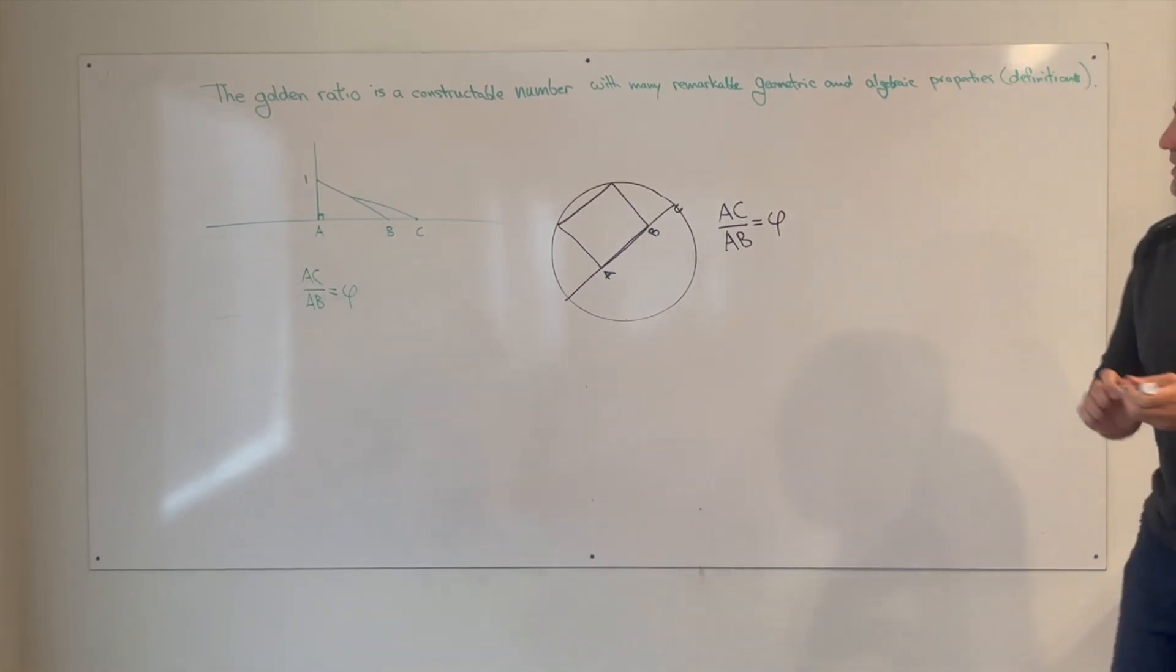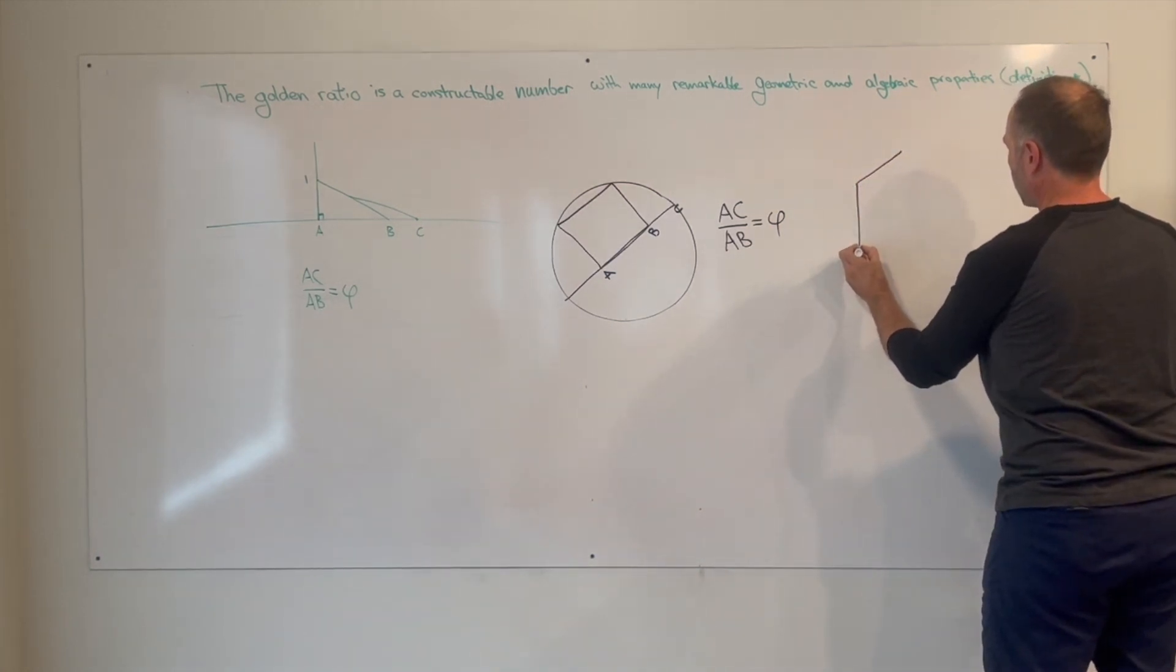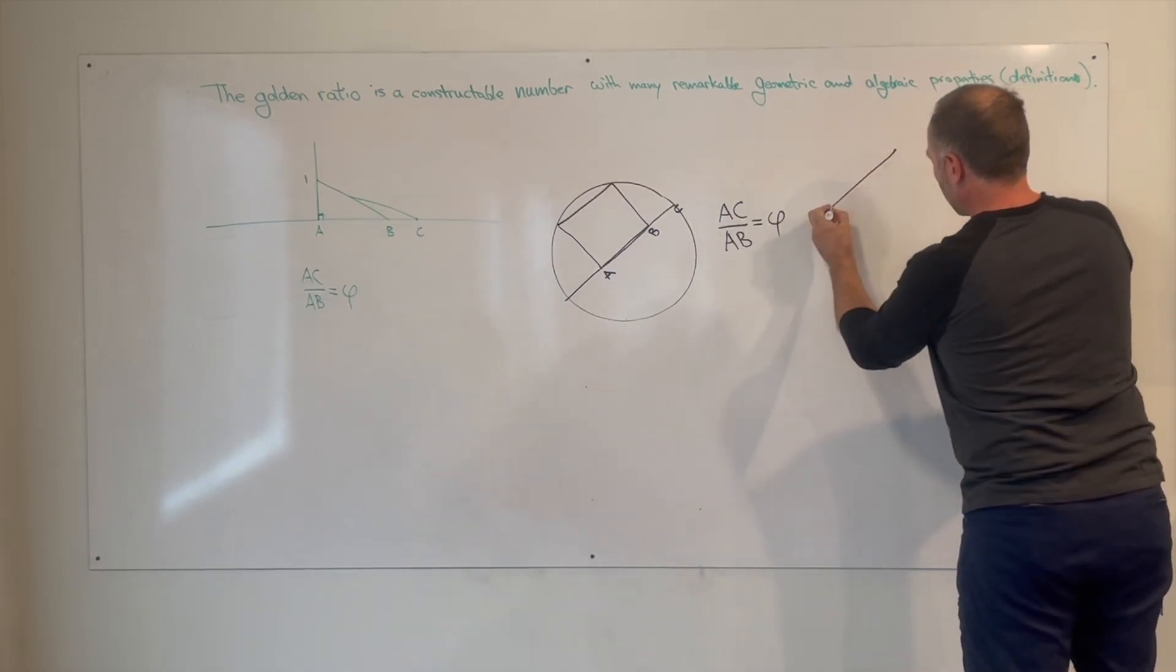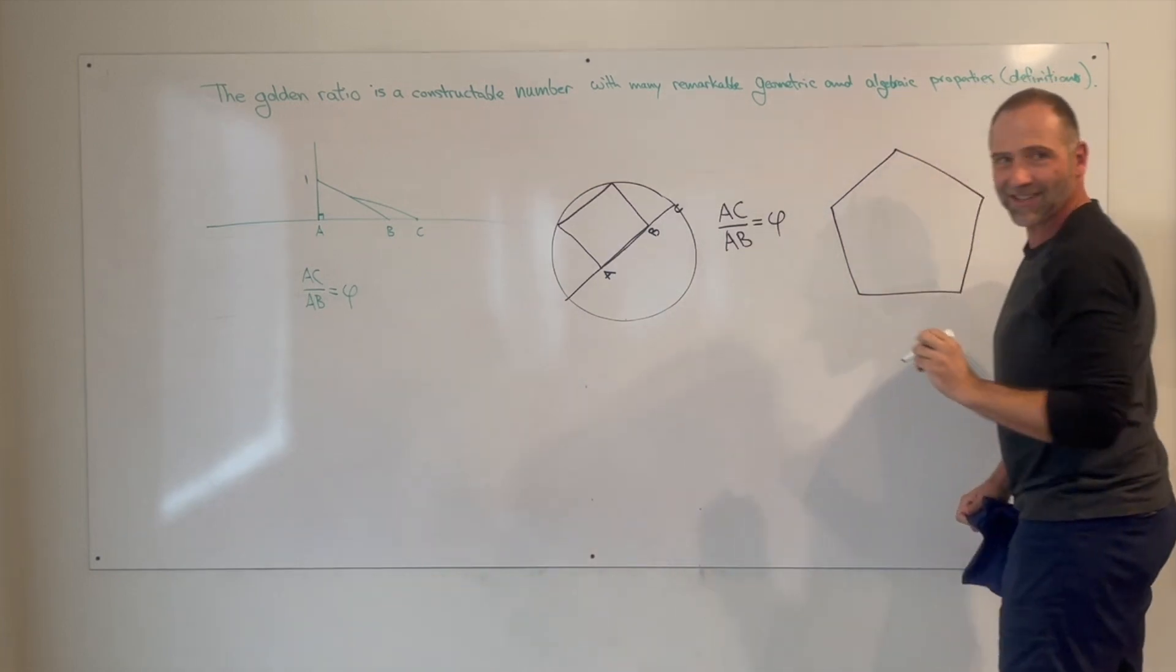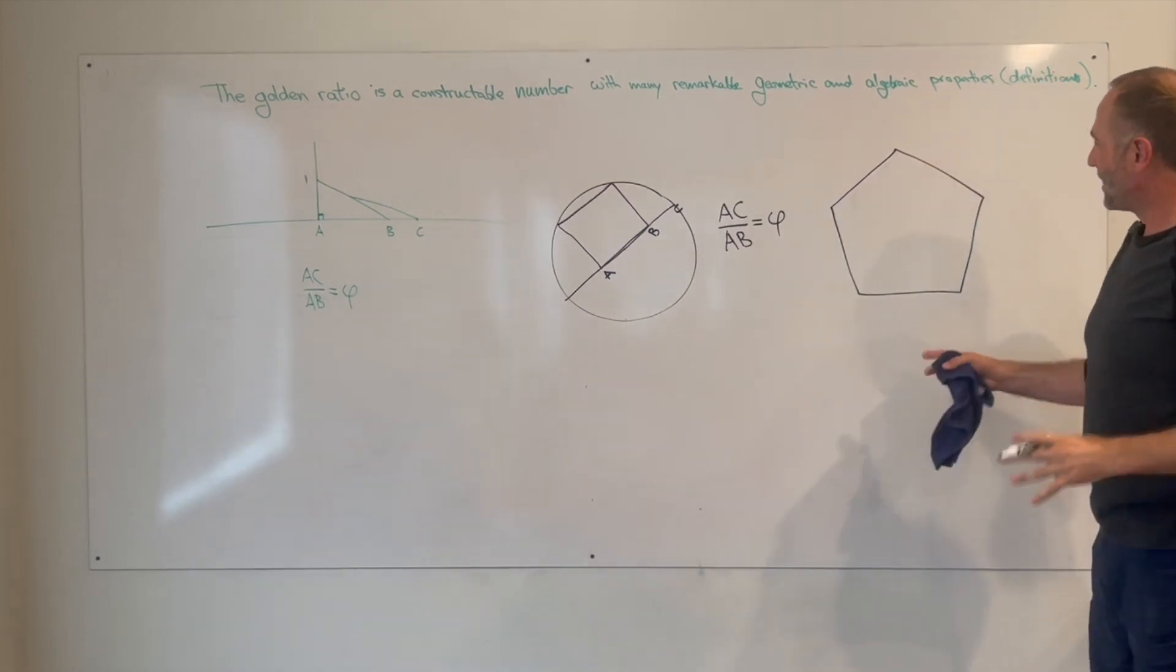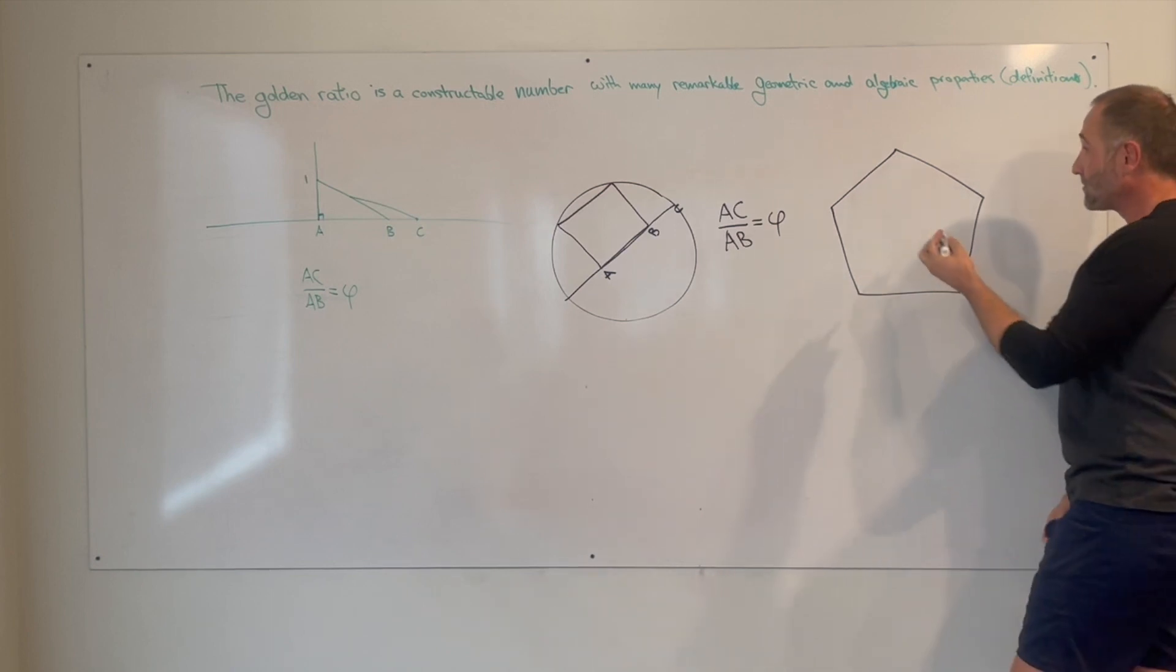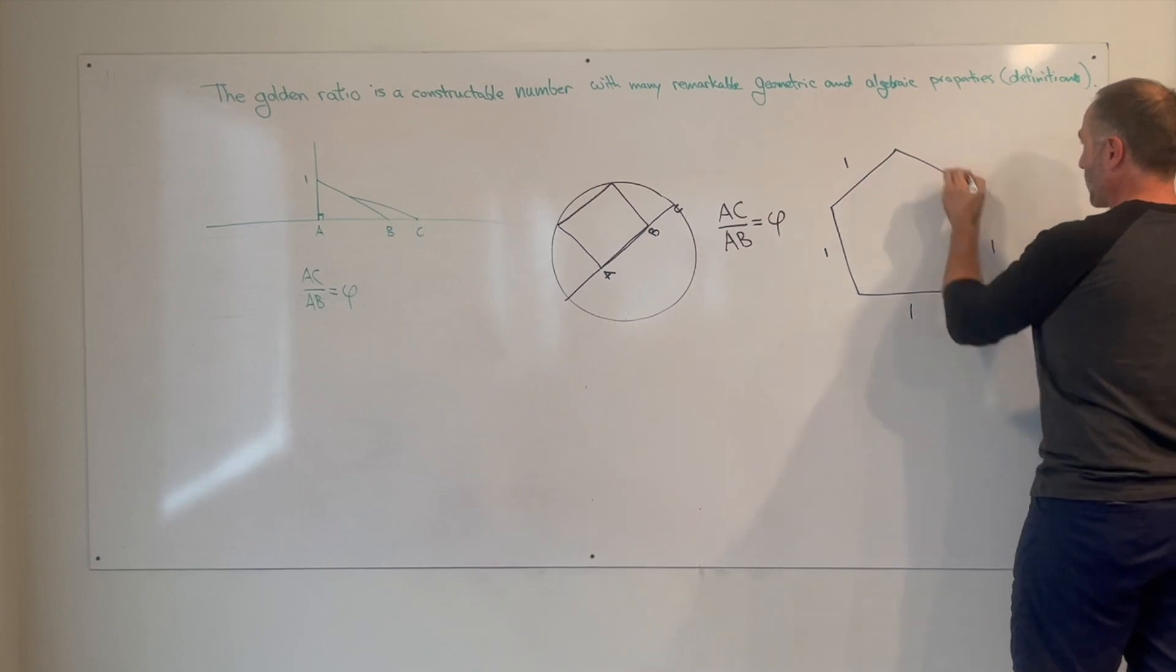Another place you can find the golden ratio is in a... we're going to need to get good at that. One, two, three, four, five. Close it up. Okay, so pretend this was drawn with all sides equal. We have a pentagon. We're going to label the sides of the pentagon a length of one. We're going to make that our unit.